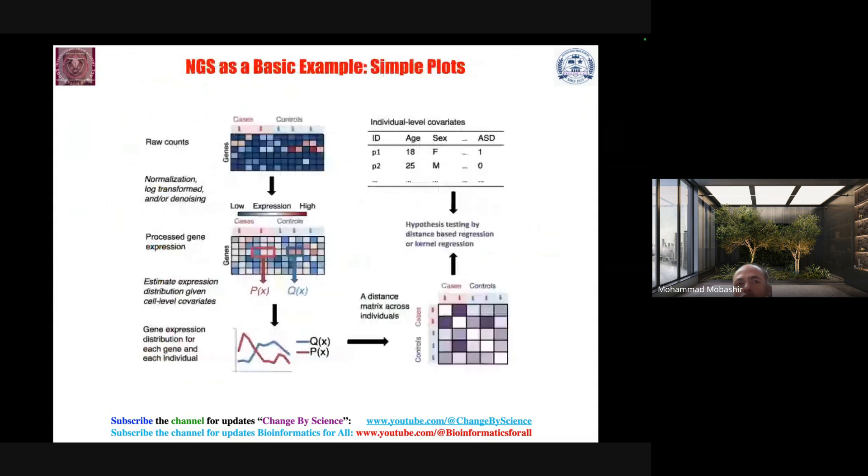For example, if you're working on NGS next generation sequencing data or RNA-seq data, the simple plots you need to think about are heat plots or heat maps. Here you can see the cases and genes, with color intensity representing expression values in case and control conditions appearing quite clearly and differently.